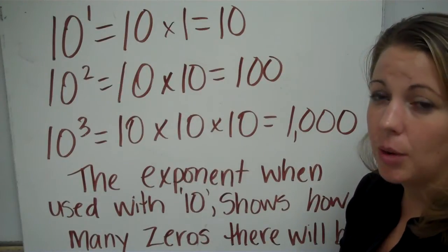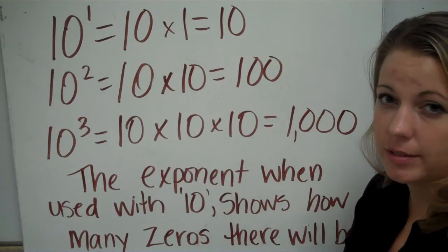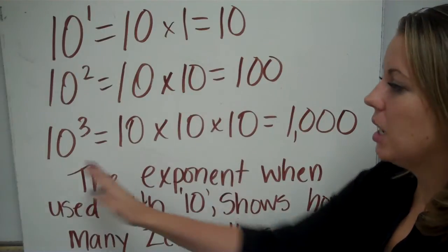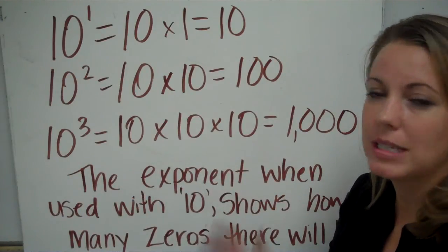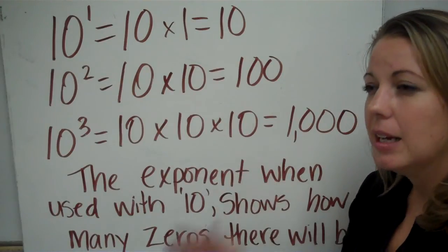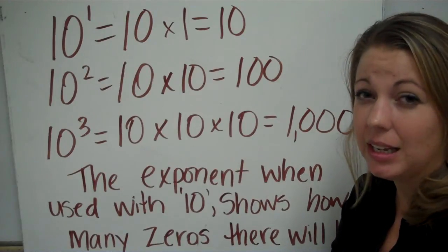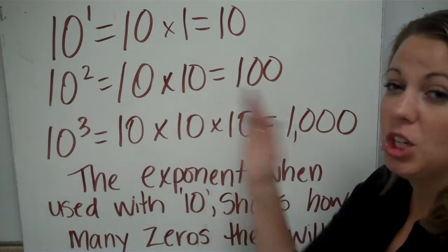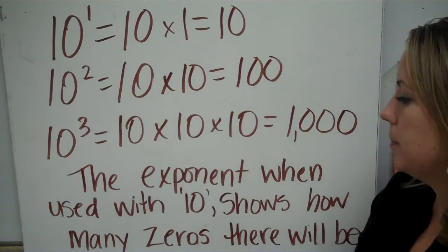Imagine getting up to ten to the fourteenth power — that would be a one with fourteen zeros behind it. Not a number we can easily see or understand, but you would know it was a huge number. It's getting bigger and bigger every time that exponent goes up.